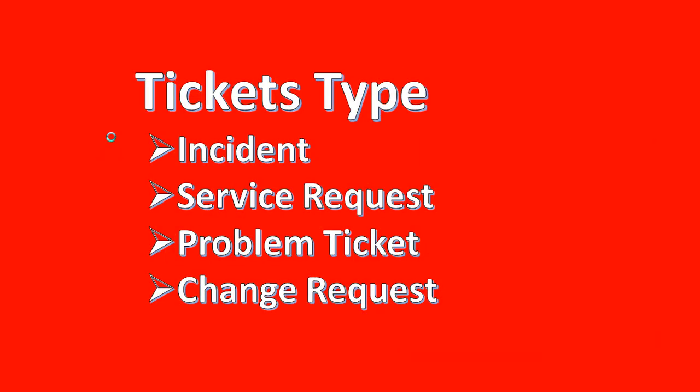We have different kinds of tickets. A ticket can be an incident, service request, problem ticket, or change request. Incident tickets are created when there is an interruption in normal business — let's say everything is looking fine and suddenly some issue is occurring, and because of that our business is impacted. At that time the user will create an incident.